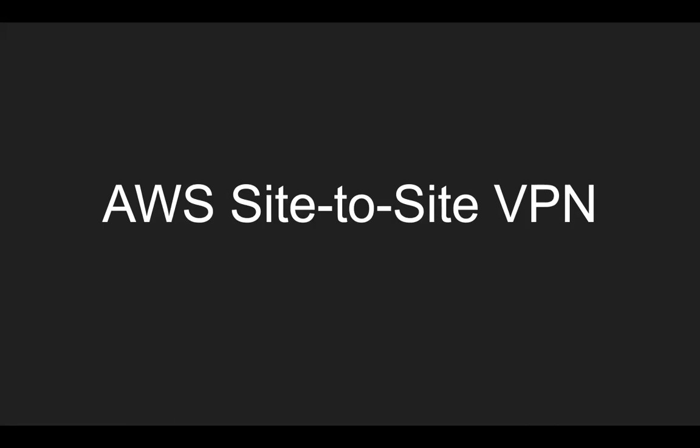This is one of the advanced concepts of AWS VPC, where we talk about site-to-site VPN connection, or virtual private network connection, all the way to your on-premise environment. Now, since this is a complicated topic, I'm going to walk you through some really basic stuff and then take you through what site-to-site VPN is all about.